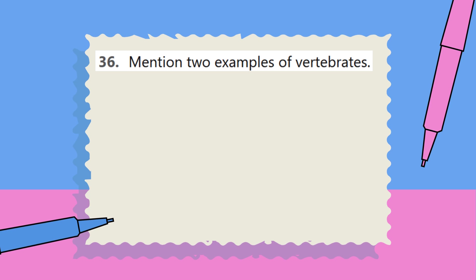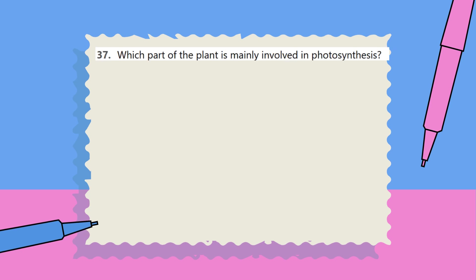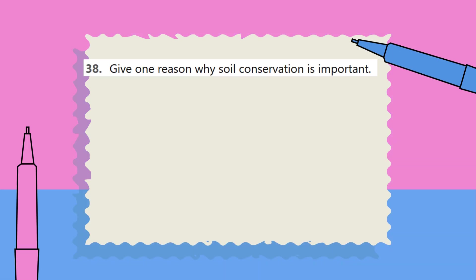Question 37: Which part of the plant is mainly involved in photosynthesis? Question 38: Give one reason why soil conservation is important.